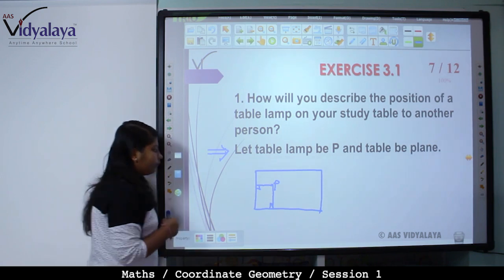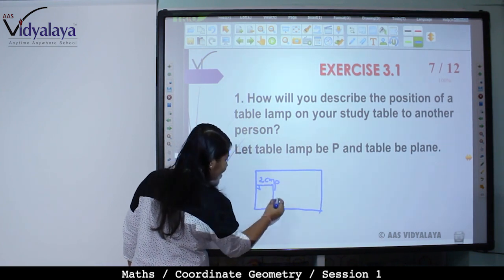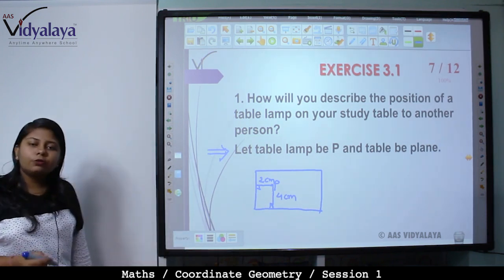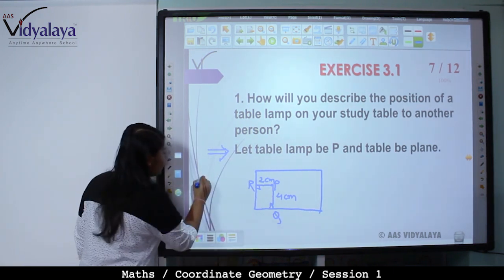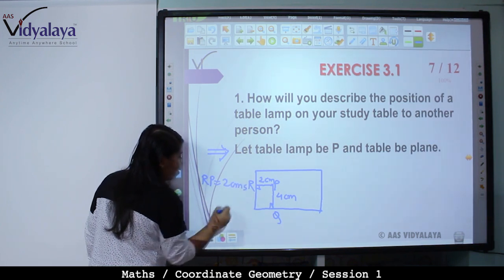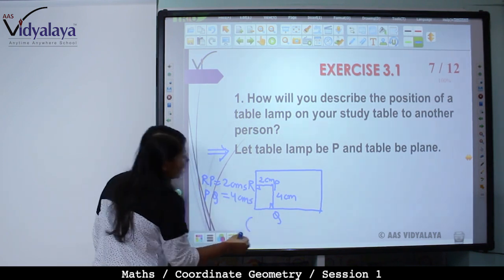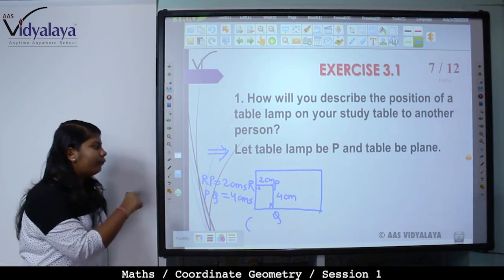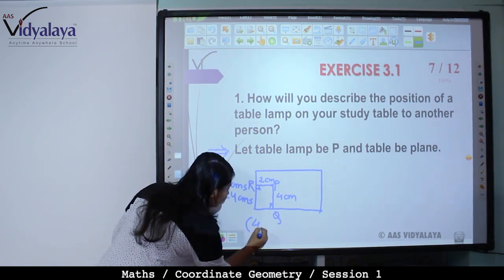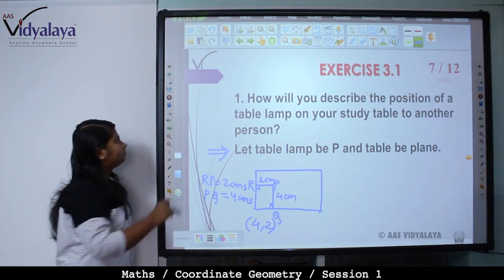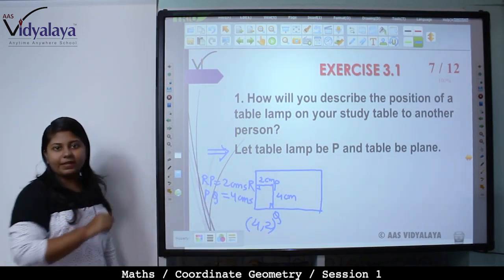Now, assume this distance is 2 cm and this one is 4 cm. Give them names — suppose R and Q. So RP is equal to 2 cm and PQ is equal to 4 cm. So what is the position? You can write it as 2,4 or 4,2. We'll write 4,2. But you have to mention here: this is column, row — just as we did before.